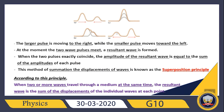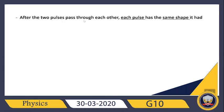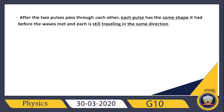After the two pulses pass through each other, the smaller one, with its normal shape, continues back in its direction — the left side — and the bigger one, with its normal shape and without any change, goes back again in its original direction — the right side. Each pulse has the same shape it had before the waves met, and each is still traveling in the same direction. The one traveling to the right continues to the right, and the one traveling to the left continues to the left.